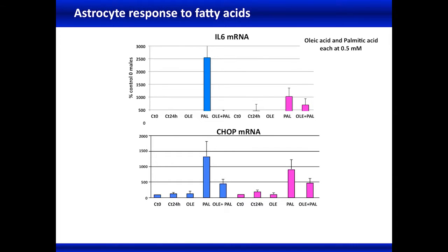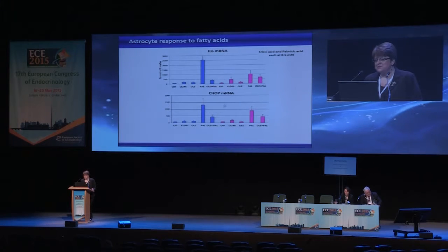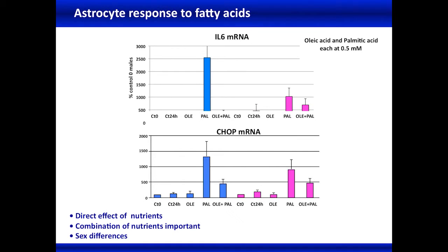If we use only oleic acid, we don't get this type of response. Saturated fatty acids and unsaturated fatty acids cause different responses, and the combination shows a protective effect of oleic acid against palmitic acid. When using a high-fat diet, it's important to know the concentrations of different types of fats because they don't all cause the same response. We also see a direct response of fatty acids on the endoplasmic reticulum unfolded protein response. Astrocytes themselves respond directly to nutrients; the combination of nutrients is important, and there's also a sex difference in the response.